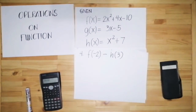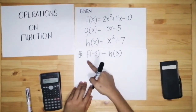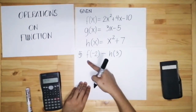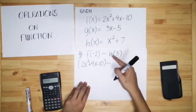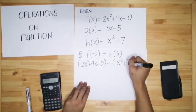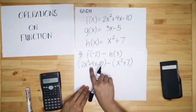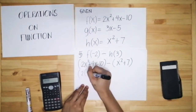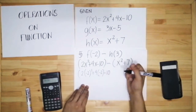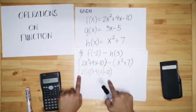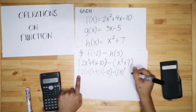Let's have number 5: f of negative 2 minus h of 3. Write the equation of f — 2x squared plus 4x minus 10 — in parentheses, then minus, then h of x — x squared plus 7 — in parentheses. Substitute: in f, all x's become negative 2: 2 times negative 2 raised to 2, plus 4 times negative 2, minus 10. In h, substitute x with 3: 3 raised to 2 plus 7.